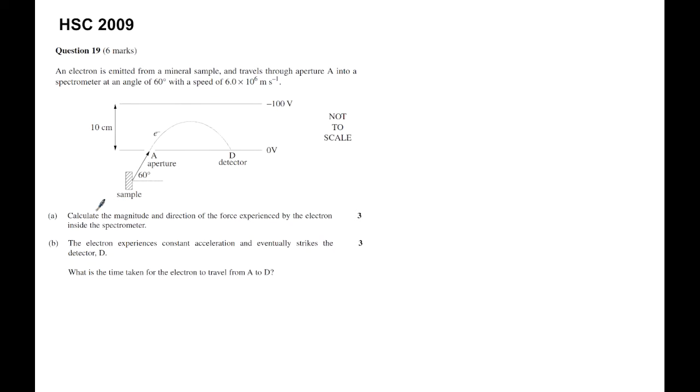It says calculate the magnitude and direction of the force experienced by the electron. And then, the electron experiences constant acceleration and eventually strikes the detector at D. What is the time taken for the electron to travel from A to D? I'd pause now if you want to attempt it.